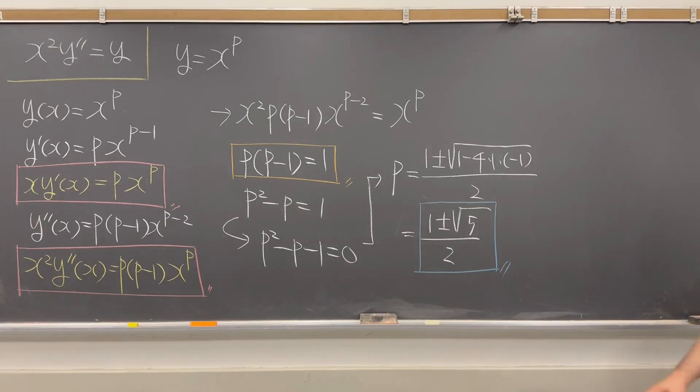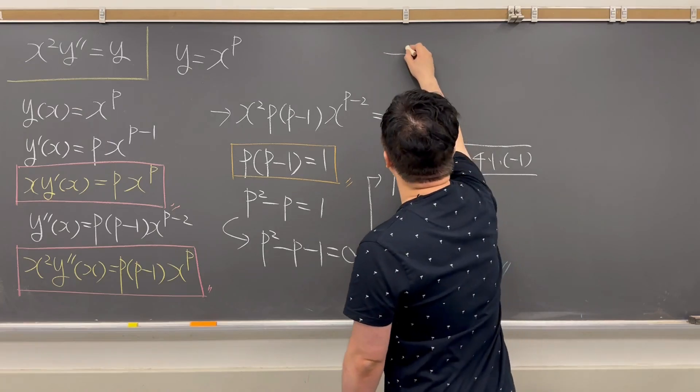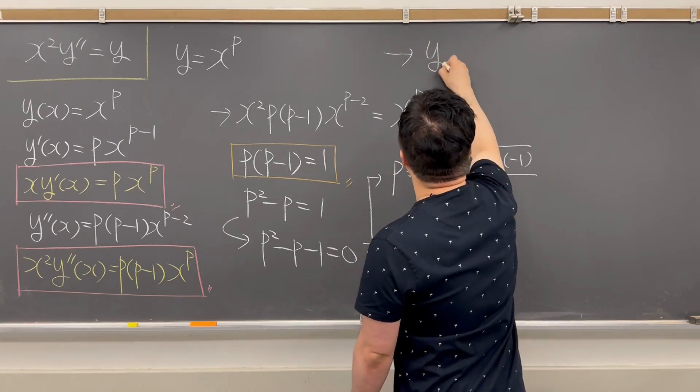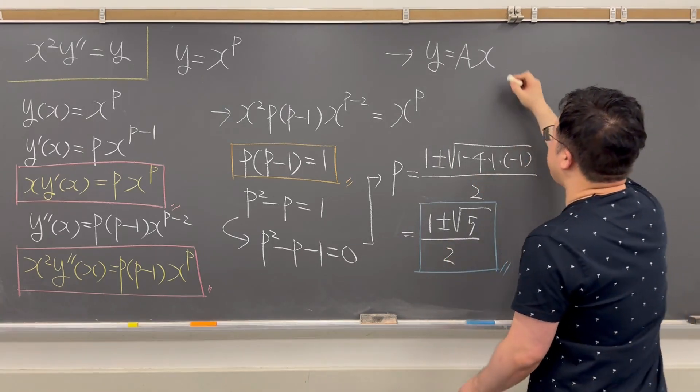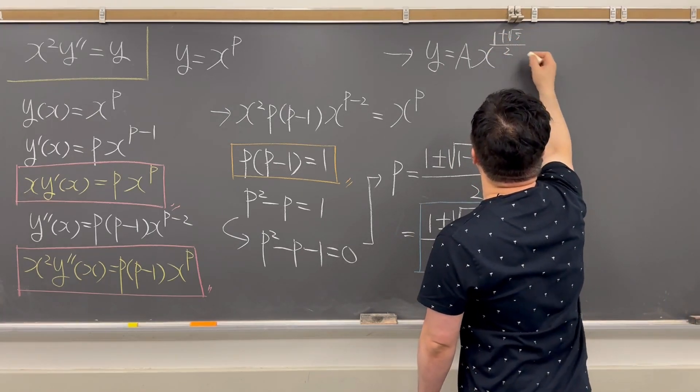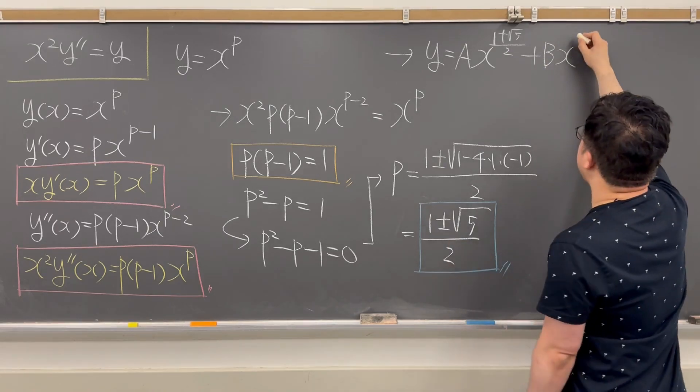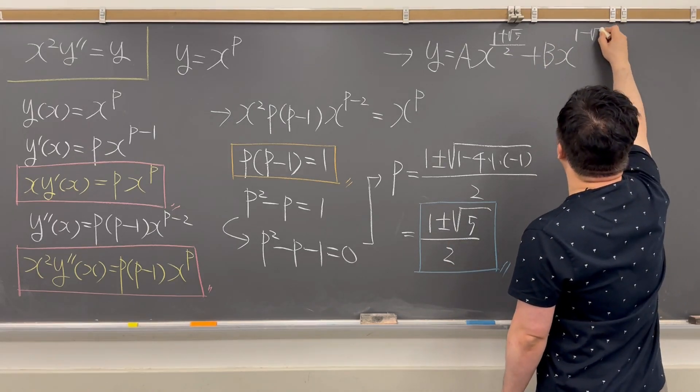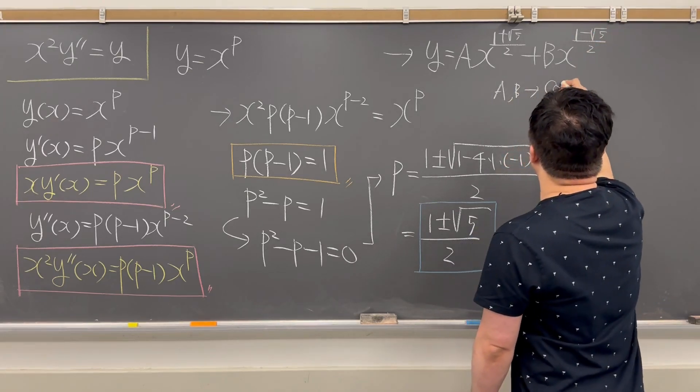Okay, so based on this, we can represent the general solution for this question, right? So now your general solution has to be y is equal to a times x to the power of 1 plus square root of 5 over 2, and plus b times x to the power of 1 minus square root of 5 over 2, where a and b are constant.